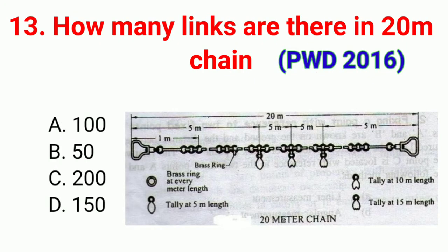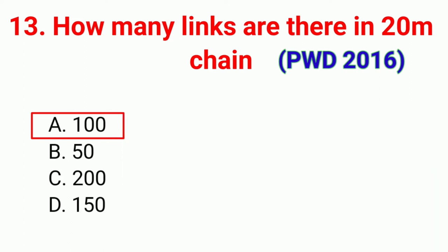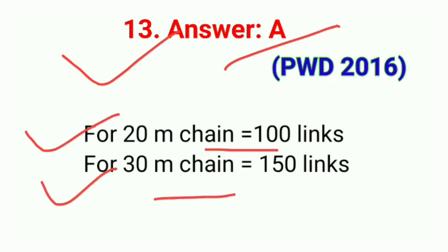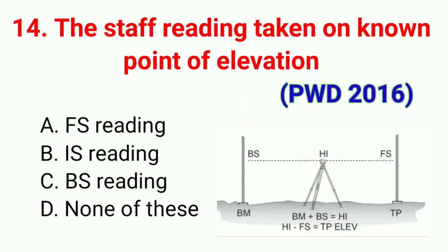Question number thirteen: How many links are there in a 20-meter chain? The correct answer is option A, 100. For a 20-meter chain there are 100 links, and for a 30-meter chain there are 150 links. Question number fourteen: The staff reading taken on a known point of elevation is called. The correct answer is option C, back sight (BS) reading.